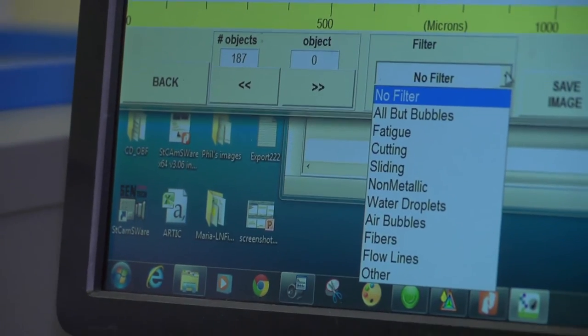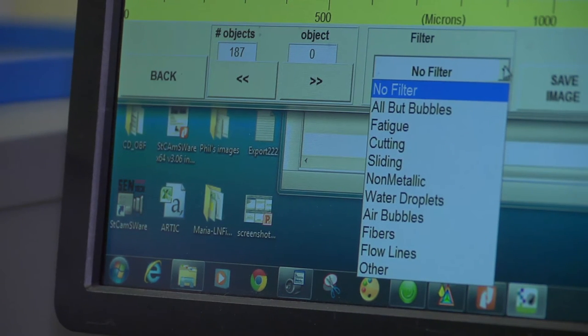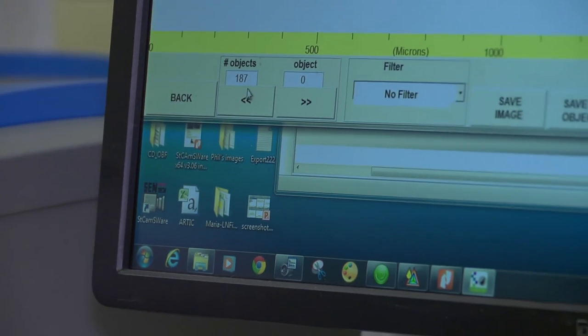water droplets, fibers, air bubbles, et cetera. One can actually print out these image maps. You can see in that sample there's 187 images. Again, that's 187 particles larger than 20 microns.